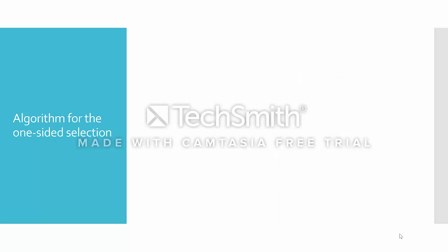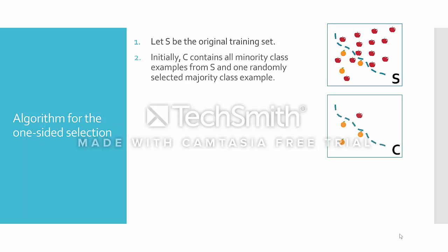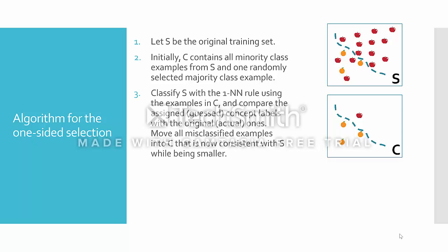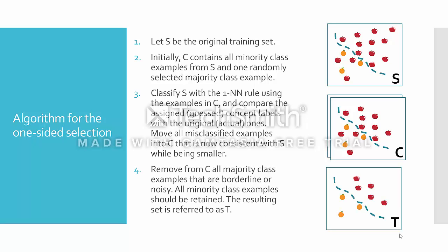It is time now to discuss the algorithm for one-sided selection. First, we start with the original imbalanced training set — let's call it S. Next, a set C is created including all minority class examples from S and one randomly chosen majority class example. Using C as a training set, we classify S utilizing the nearest neighbor rule. We then move all misclassified examples from S to C, which makes C consistent with the original training set but excluding redundant examples.